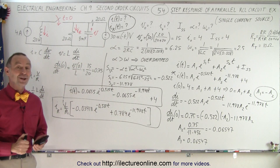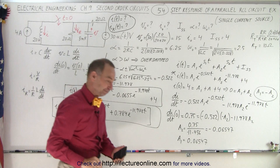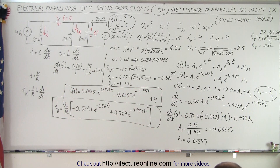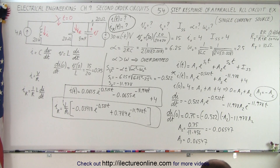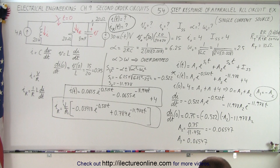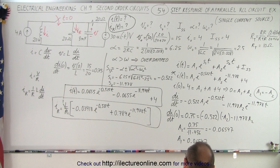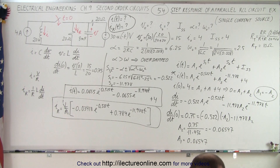And that is how it's done. Let's verify: 0.0655 — yep, that's correct. And for the current through the resistor, 0.784 — yep, looks right. We're good.